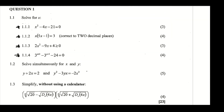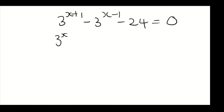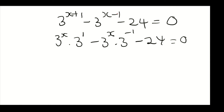Now we're going to solve 1.1.4. We have 3^(x+1) minus 3^(x-1) minus 24 equals zero. The first thing is to break it down: that's 3^x times 3^1 minus 3^x times 3^(minus 1) minus 24 equals zero. We then use a substitution, letting k equal 3^x because it's common throughout.